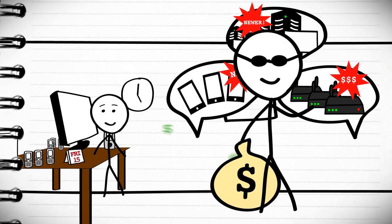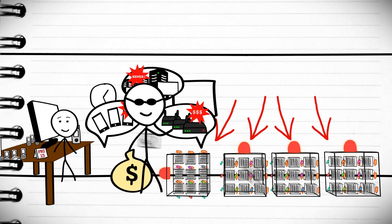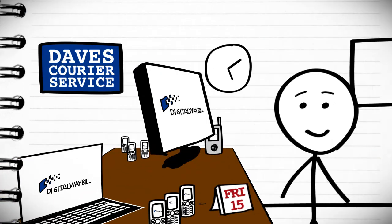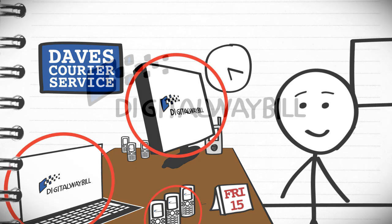You shouldn't have to buy new equipment or store your information off-site with competitors to make new software work. Thankfully there's Digital Waybill. It works with the equipment you already own and the way you're already doing business.